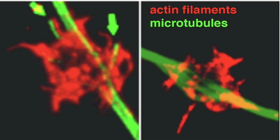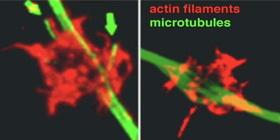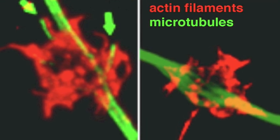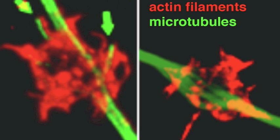When an NGF bead lands on an axon, a new growth cone is induced at the contact site and a branch sprouts from the axon.